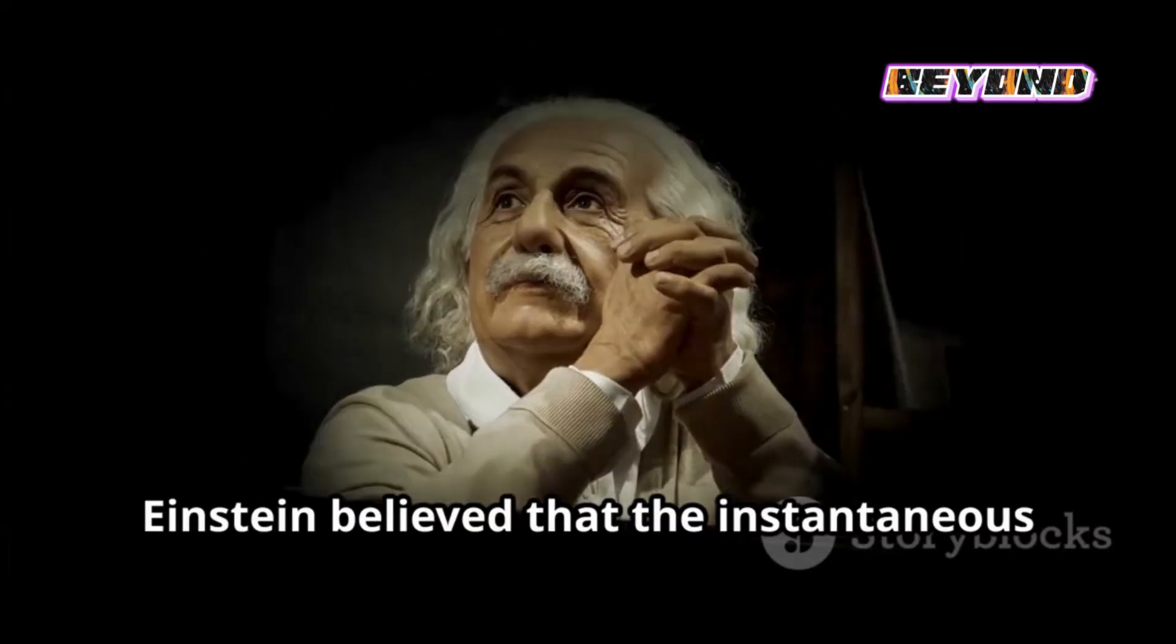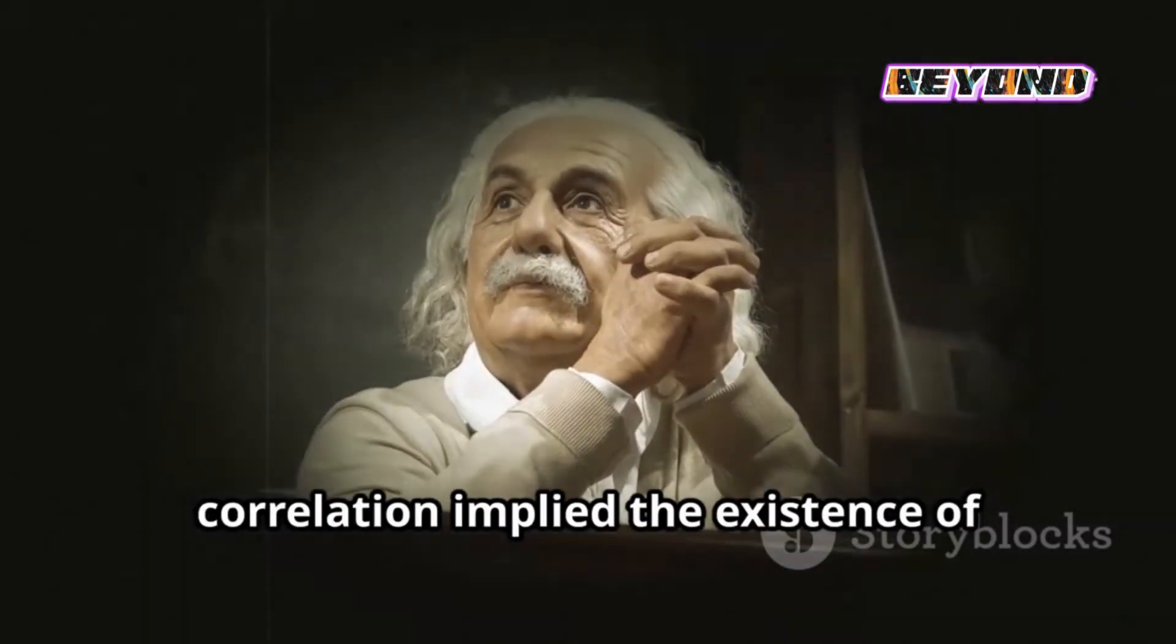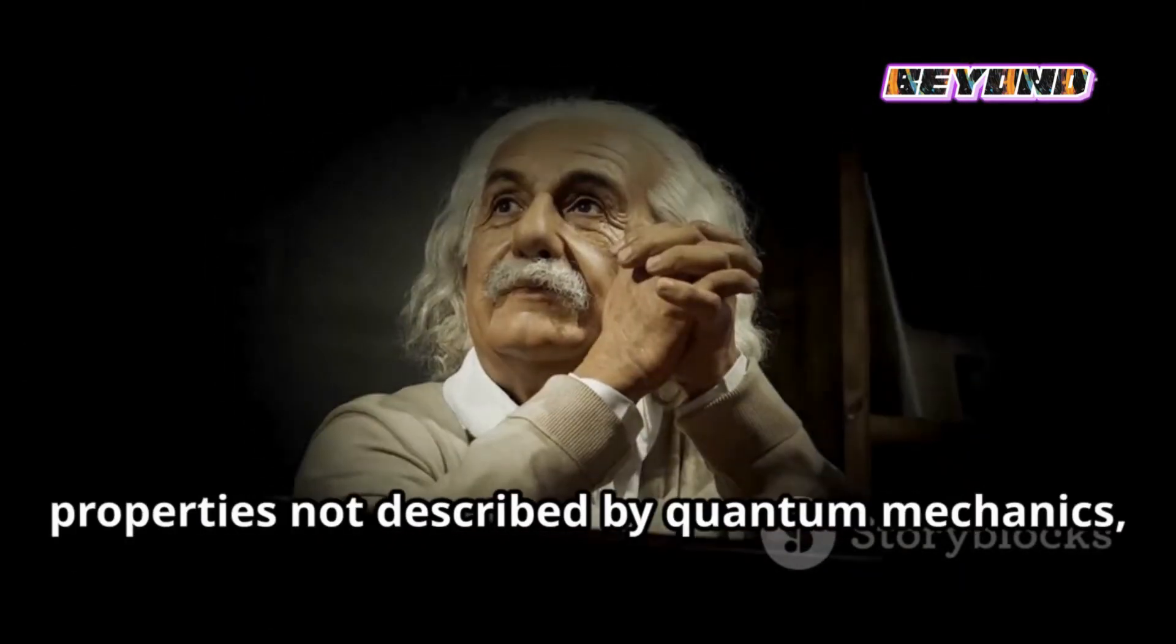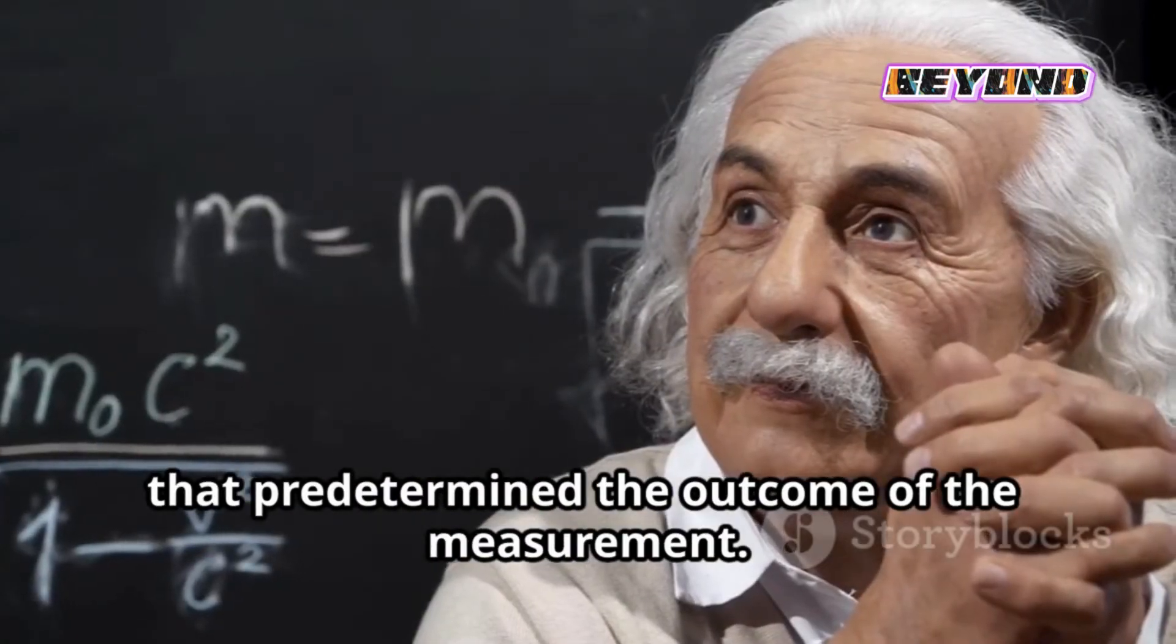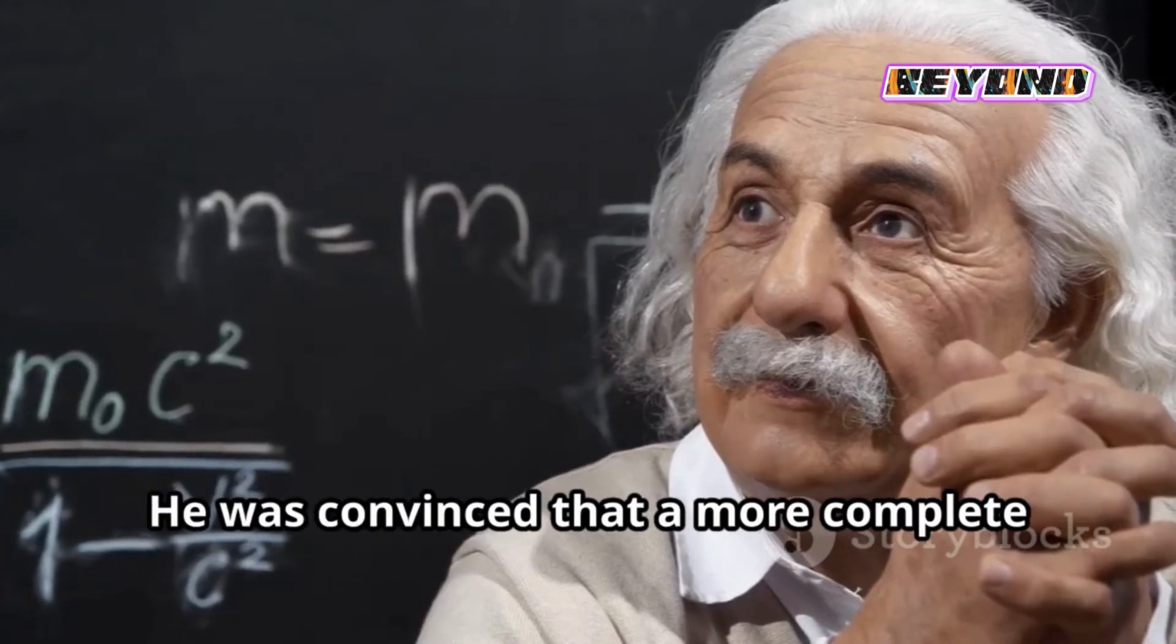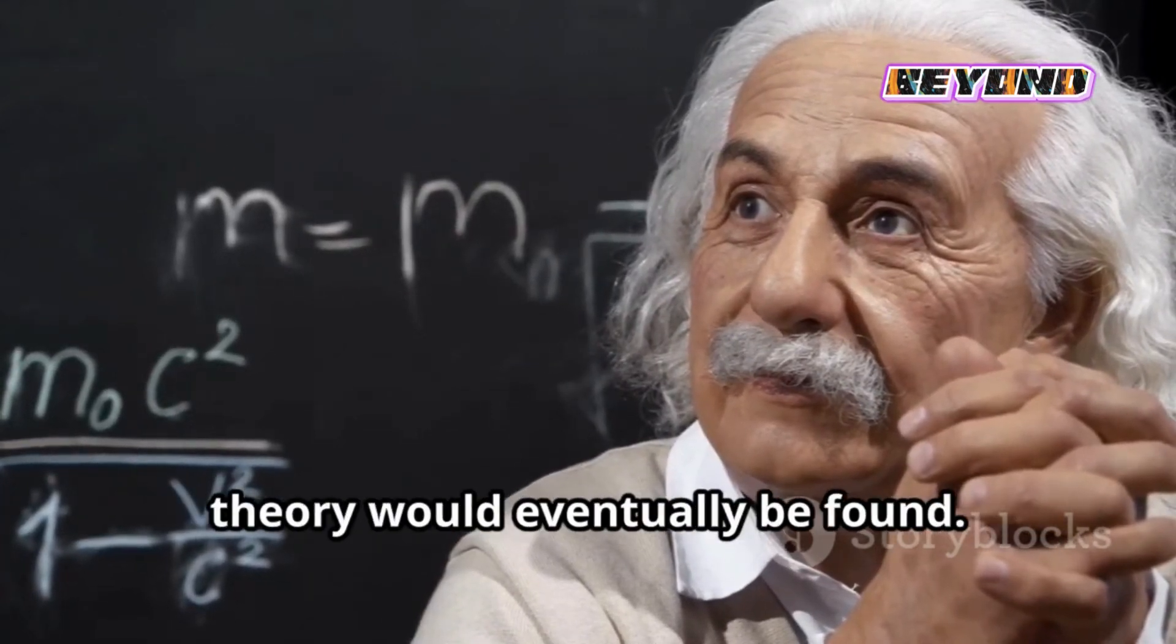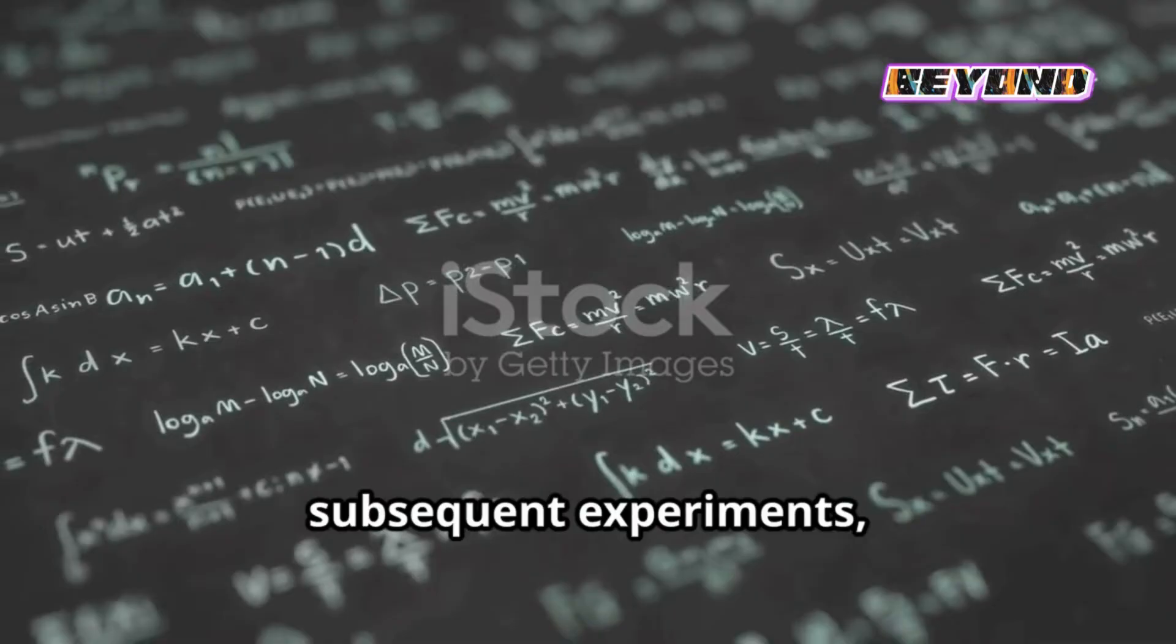Einstein believed that the instantaneous correlation implied the existence of hidden variables, properties not described by quantum mechanics that predetermined the outcome of the measurement. He was convinced that a more complete theory would eventually be found.